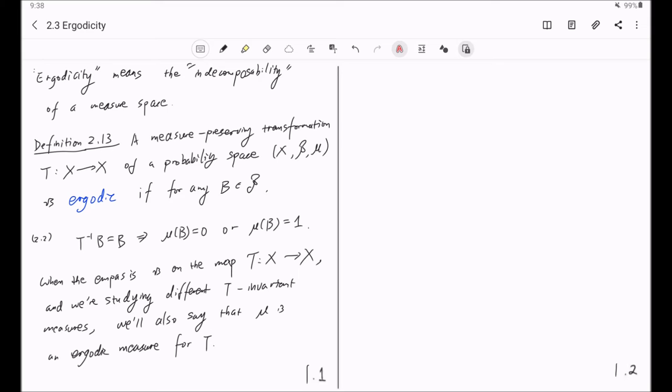The definition of ergodicity is interesting because we can have several characterizations of the ergodicity other than this one, and those are provided by the following proposition. The following are equivalent properties for a measure preserving transformation T of the measure space X, B, Mu. First, T is ergodic.